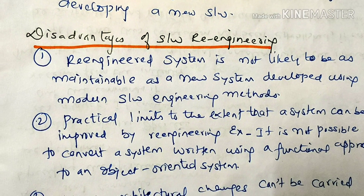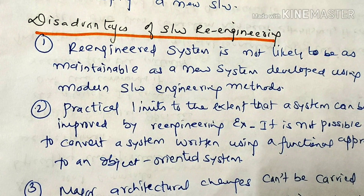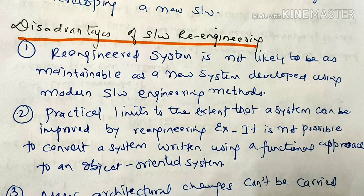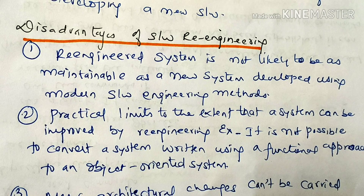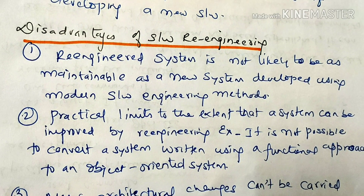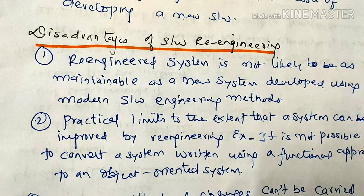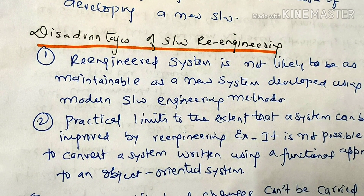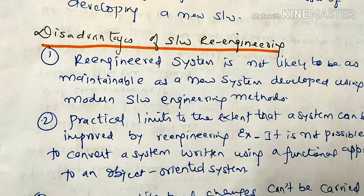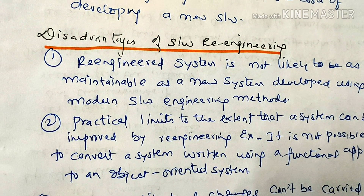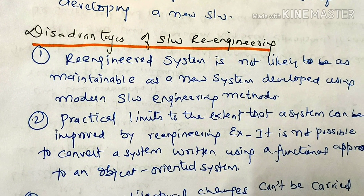Next are the Disadvantages of Software Re-engineering. The first disadvantage is that a re-engineered system is not likely to be as maintainable as a new system developed using modern software engineering methods. If you develop a new software using modern software engineering methods, the re-engineered system will not be as up-to-date in comparison.